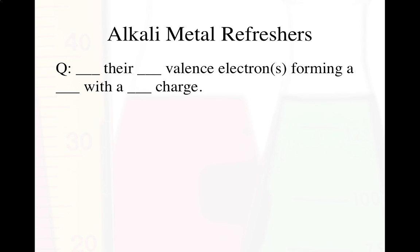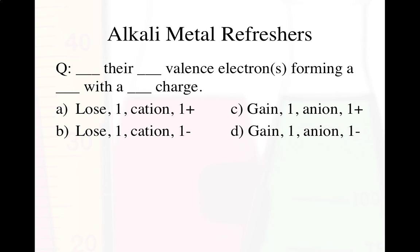A little refresher on alkali metals. If you look at the alkali metals on the periodic table and think about electron configurations and what they want to get to — the noble gases — we can see that alkali metals are going to lose one valence electron, forming a cation with a 1+ charge. So A is the correct answer.